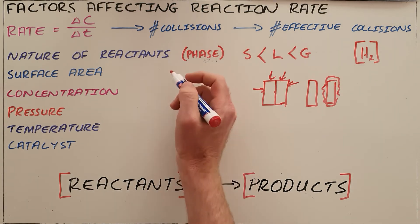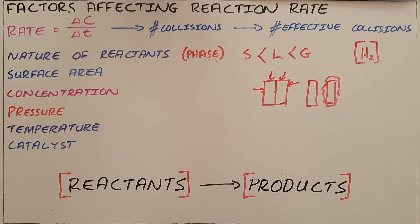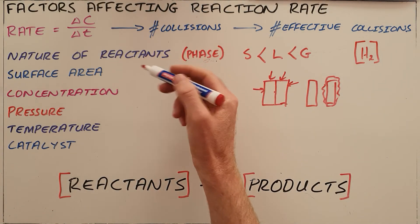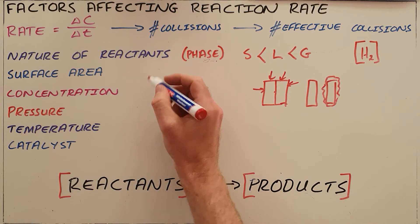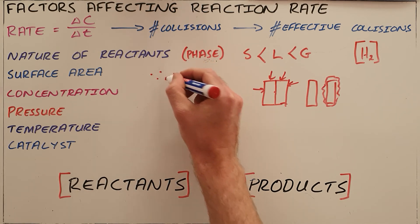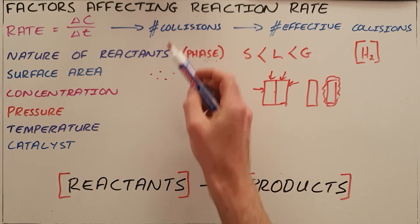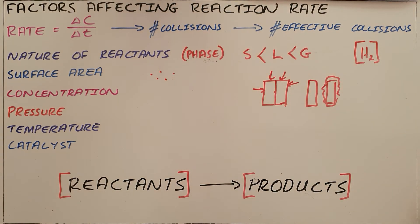When we say we increase the surface area, we are increasing the amount of contact surface area. Therefore, you will find that when we have a substance that is in powder form, meaning it is very small pieces, it has an incredibly big surface area. Therefore, there's space for more collisions and more effective collisions.